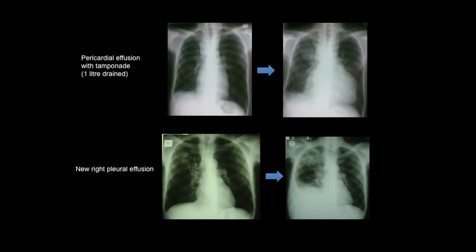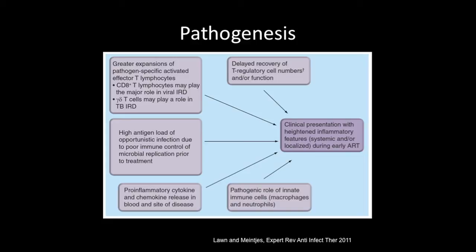Another important manifestation is the development of effusions — for example, a patient who developed a massive pericardial effusion requiring one litre of pericardial drainage with potential life-threatening pericardial tamponade, and patients who develop enlargement of pleural effusions due to TB IRIS.